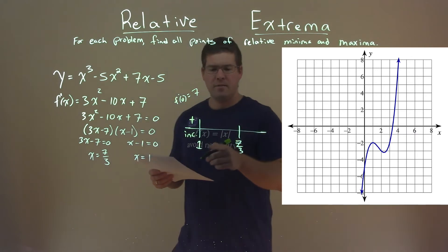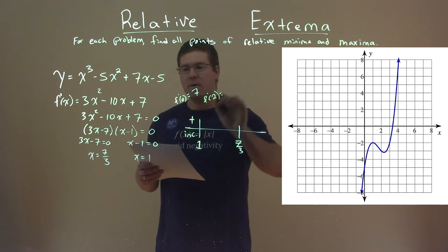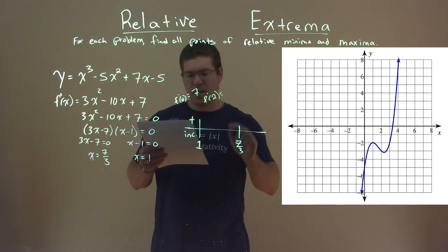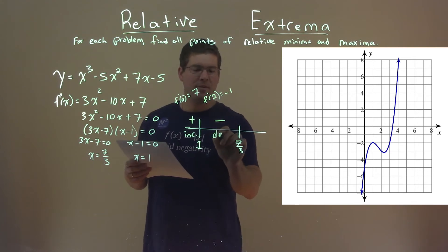From there, I did a value between 1 and 7 thirds, which was 2. So f prime of 2, plugged it into my derivative, and I got a negative 1. I just care that it's negative and that it's decreasing.